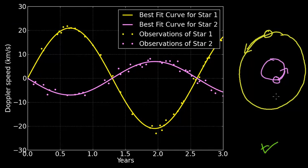We're looking at this object as it comes around. Star number one is moving towards us, then sideways, then away from us, then sideways, then towards us, then away from us. The other star, as it goes around — you can imagine these two tied together, kind of skating around — they're both orbiting about the center of mass. The other star is moving away from us, then towards us, alternating, as we can see in the purple curve.